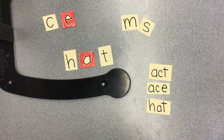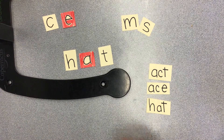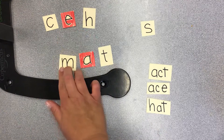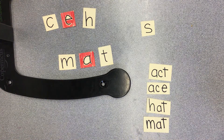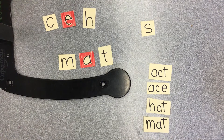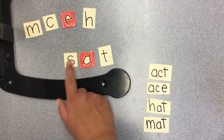Change one letter to make the word mat. Put your shoes on the mat at the door. The A-T stays the same and we just add an M. Then change one letter to make the word sat. I sat on the broken chair. Sat.